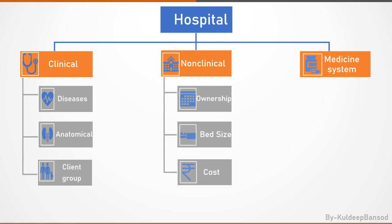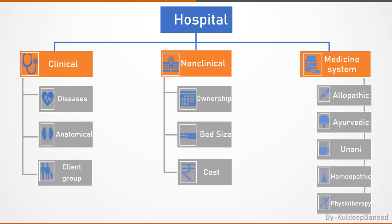The non-clinical basis includes ownership — meaning private, government, machinery, etc. — as well as bed size and cost. According to the system of medicine, hospitals are classified as allopathic, ayurvedic, unani, homeopathic, physiotherapy, and so on.